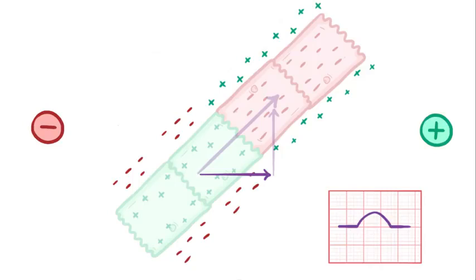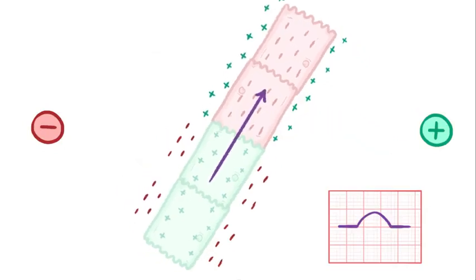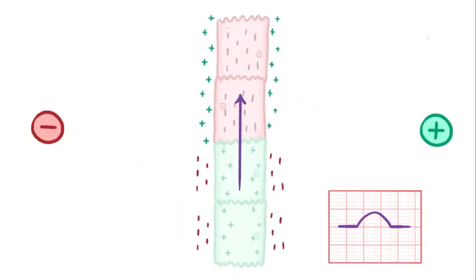In other words, the size of the deflection on the ECG tracing always corresponds to the magnitude or size of the dipole in the direction of the electrode. The perpendicular component isn't pointing at the electrode, so it doesn't cause any deflection. In fact, if there's a depolarization wave that goes straight up, which is perpendicular to the positive and negative electrodes, then there'd be no deflection at all.